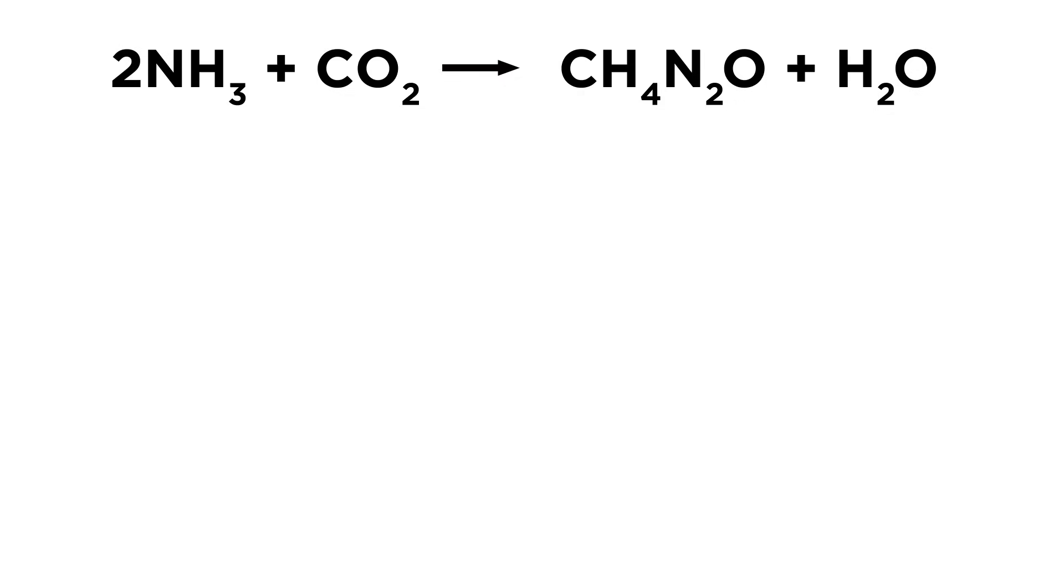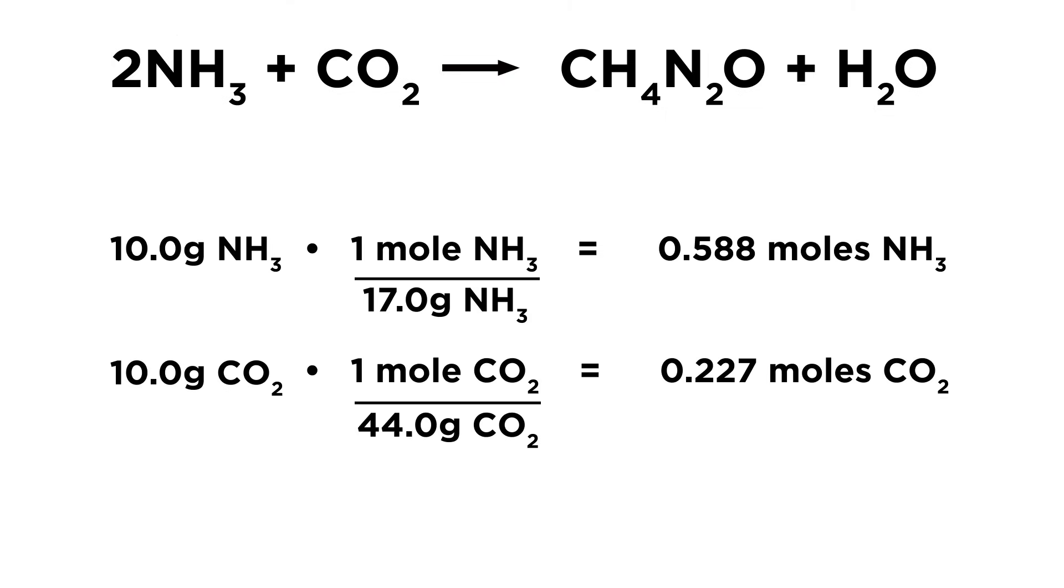Let's look at a real reaction. Urea is produced this way. If we start with ten grams of each reactant, which one limits the reaction? Well, the first thing we have to do is convert to moles because mass doesn't tell us anything—we need numbers. So we convert both to moles using their respective molar masses.